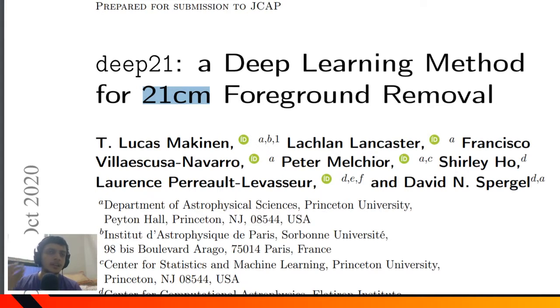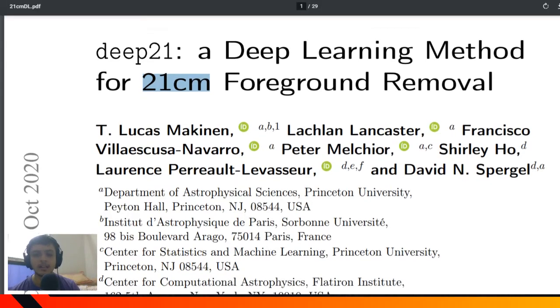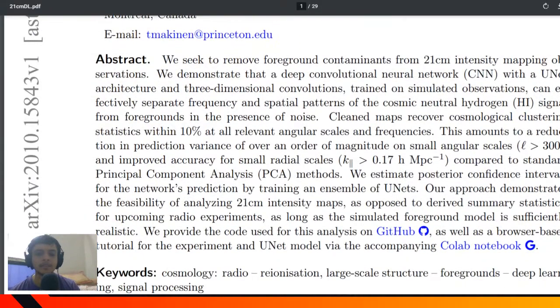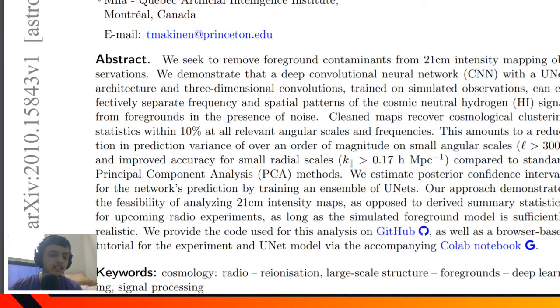There is a lot of data that we gather from this 21 centimeter intensity mapping, and there's all sorts of connections that we need to do with this data. In this paper, the authors discuss removing foreground contamination by using an image processing neural network technique.